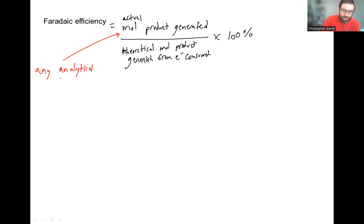You could get this from. This could be GC, gas chromatography. This could be a spec, NMR, any way, a colorimetric assay, any way that you're going to figure out how many moles of product you actually produced in your electrochemical cell, in your electrochemical reaction.